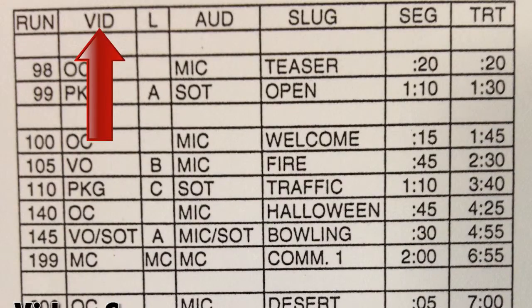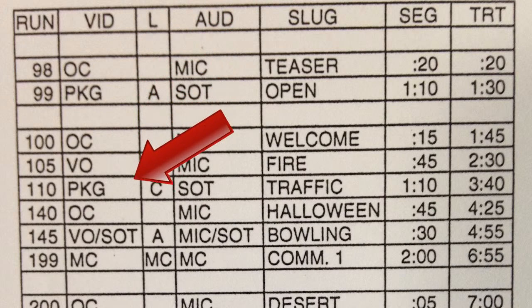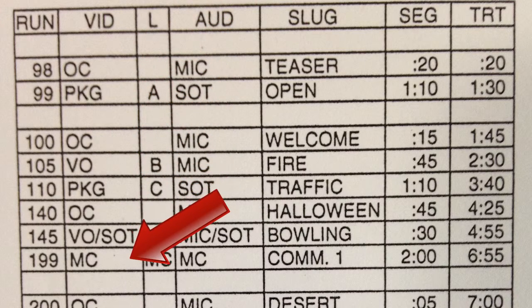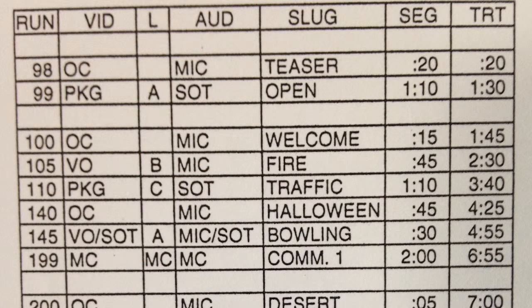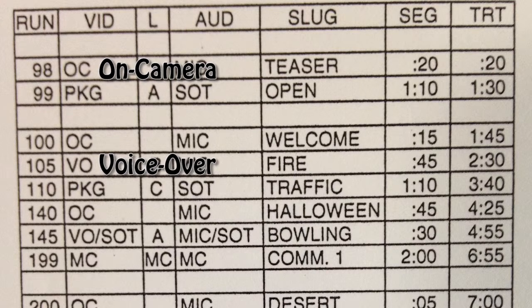The vid, or video source column, indicates the primary video sources for each segment. The types of videos are identified by acronyms, including OC for on-camera, and VO for voiceover, playing over a pre-recorded clip.